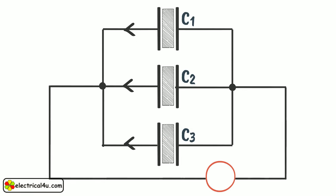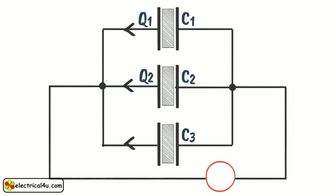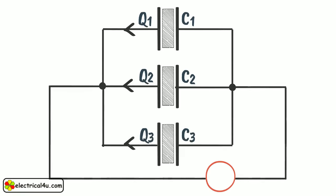Due to the current through capacitor of capacitance C1, finally charge accumulated in it is Q1. Similarly, due to the current through capacitor of capacitance C2, finally charge accumulated in it is Q2. And due to the current through capacitor of capacitance C3, finally charge accumulated in it is Q3.